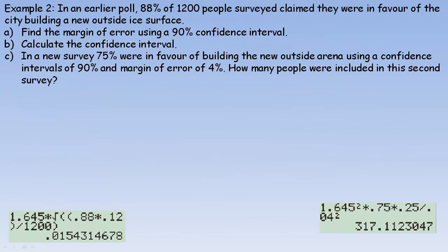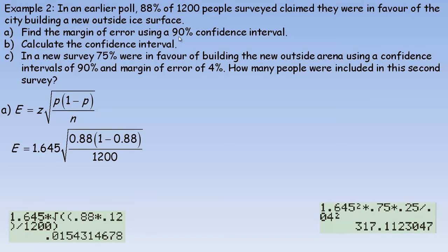Last example, number two. In an earlier poll, and this is similar to the example from the first page, 88% of 1,200 people surveyed claimed they are in favor of the city building a new outside ice surface. We're asked to find the margin of error using a 90% confidence interval, and then calculate the confidence interval. So here's our error formula, and for a 90% confidence interval, z would be 1.645.